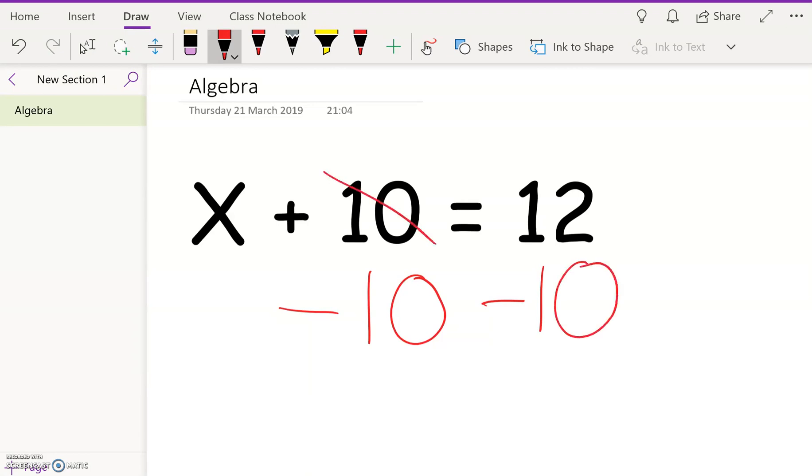Now plus 10 and minus 10 will cancel each other out, so I'm going to cross those out. So we're now left with X equals 12 minus 10, which is 2.